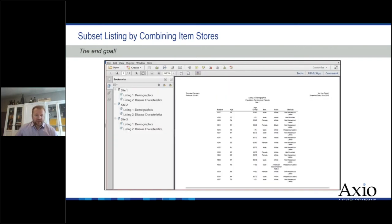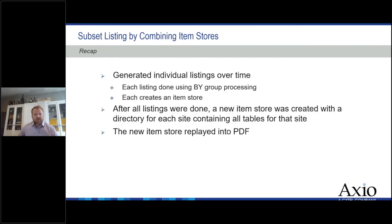If I look at this new item store, I have a directory for each site with two tables within each site. If I replay this, I simply get the bookmarking structure I want — all listings for each site grouped together. To recap: we generated listings over time, different people, different days, as long as stored permanently. Each listing used the same by-group processing, and we created an item store for each one. Once done, we created a new item store structured so all listings for each site were grouped together, and replayed them into a PDF.